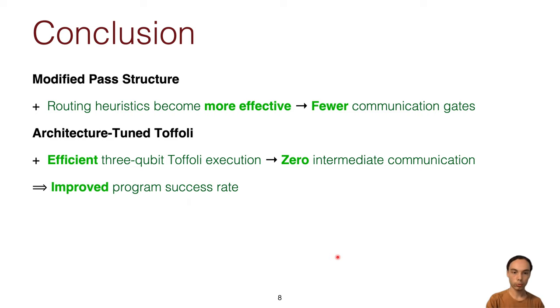So this method is compatible with other noise-aware compiler methods that look at the variations of your hardware and can choose circuits based on noise, and this will improve the overall success rate.